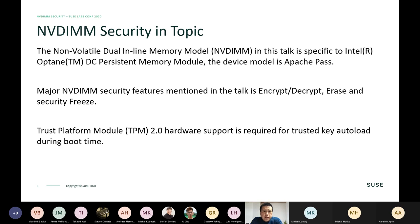The NVDIMM in this topic is specific to Intel Optane DC Persistent Memory, and the device model is Apache Pass — that's the first generation of the Intel DCPMM. The major medium security features mentioned in this talk are mainly encrypt and decrypt. I will also mention erase and security freeze, but most of the major content is about encrypt and decrypt, and also the TPM (Trusted Platform Module).